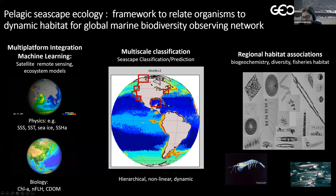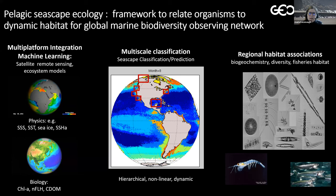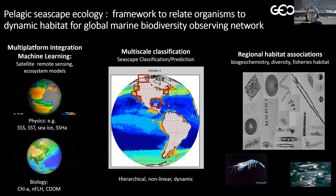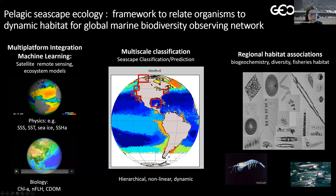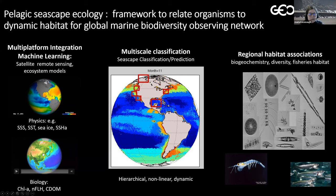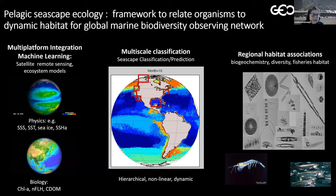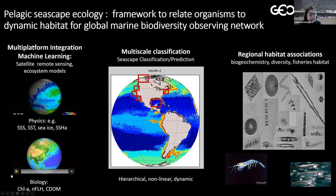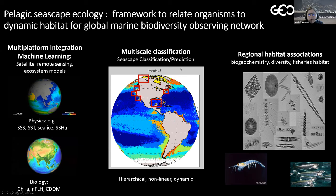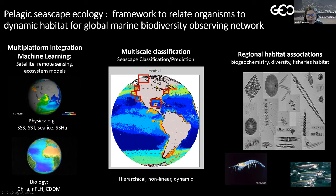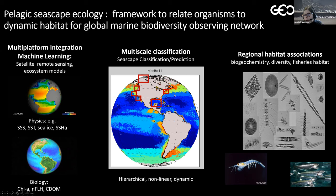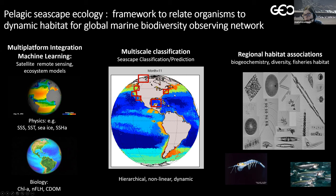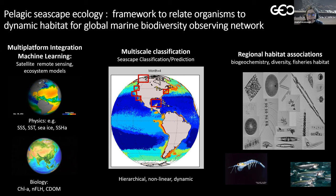We're doing this primarily through a framework of pelagic seascape ecology. Seascapes are a way that we can relate organisms or in situ measurements to dynamic marine habitats as part of this MBON. We integrate multiple platforms and multiple synoptic datasets using machine learning methods. These include physical variables such as sea surface temperature, salinity, sea ice, and sea surface height anomalies, but also biological variables from ocean color including chlorophyll A, fluorescence line height, and dissolved organic matter. We classify our data in space and time to get a dynamic biome or seascape classification.